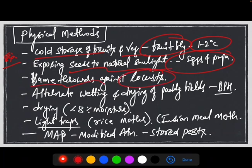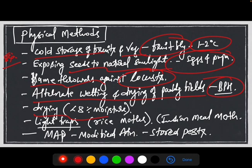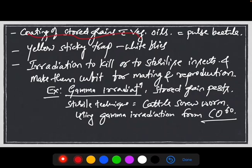Flame throwers against locusts — we know the locust incidences occurred in 2020-21 in the northwestern states like Rajasthan and Punjab. Alternate wetting and drying of fields is very effective against brown planthopper in rice fields, as maintaining critical moisture conditions will reduce the incidence of insect pests. Light traps will attract various moths like rice moths and Indian meal moths. Modified atmospheric packaging will also reduce the incidence of pests.